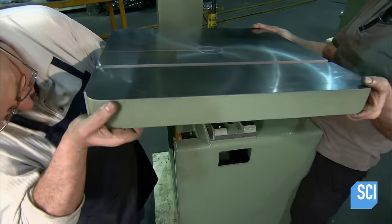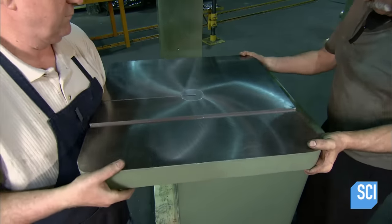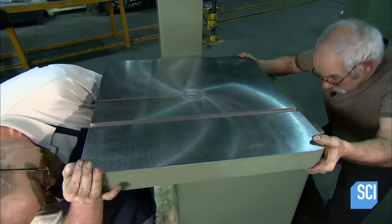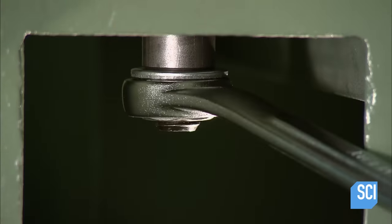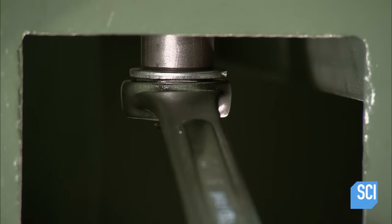Next, they bolt in the tabletop. It tilts on trunnions, pairs of mating half circle cast iron supports, one attached to the table's underside, the other to the cabinet's table frame.